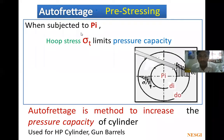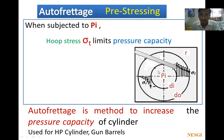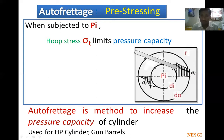When the cylinder is subjected to internal pressure pi, hoop stress sigma t limits the pressure capacity — sigma t is the maximum stress induced in the cylinder. When there is internal pressure, you can see the stress distribution: sigma t is the tangential stress and sigma r is the radial stress. Tangential stress is maximum at the inner surface and minimum at the outer surface.